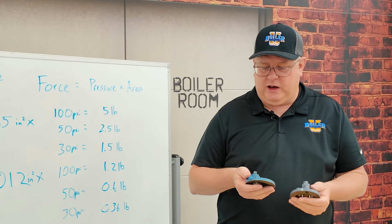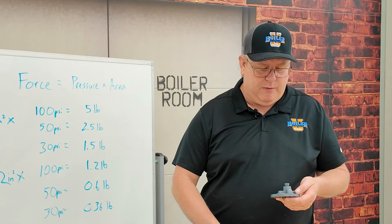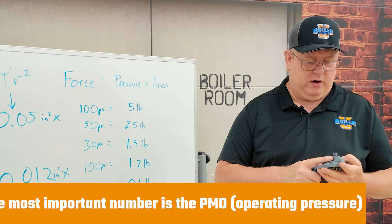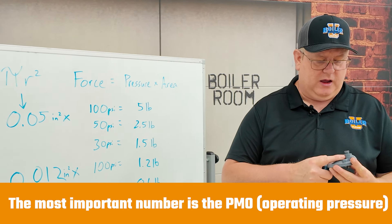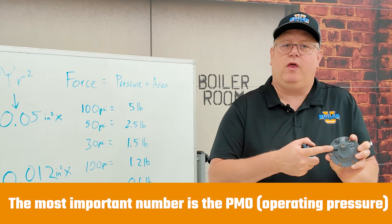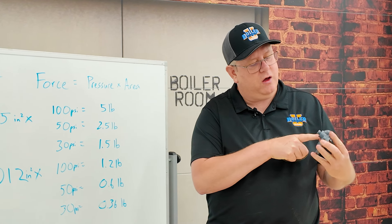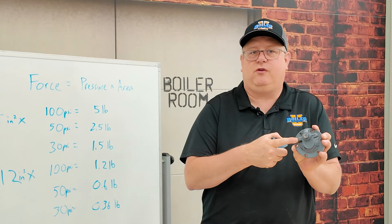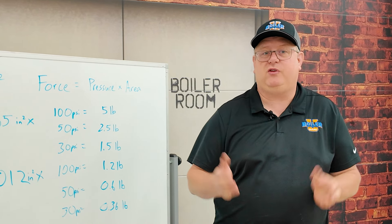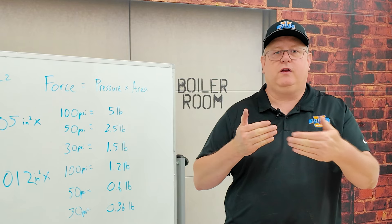When we look at a trap, it may have a maximum working pressure, but the most important number is actually the PMO, or the operating pressure. And that's actually a differential — because we're going to have pressure perhaps on both sides of that orifice.